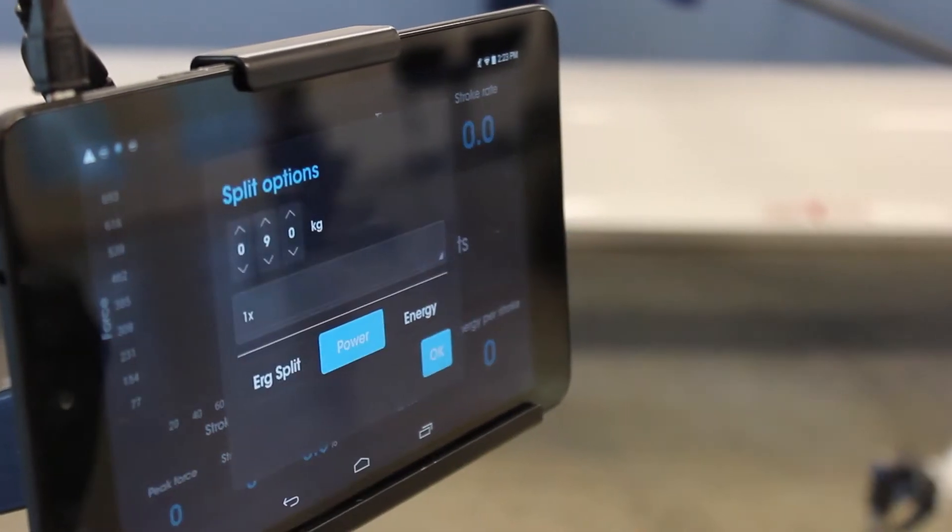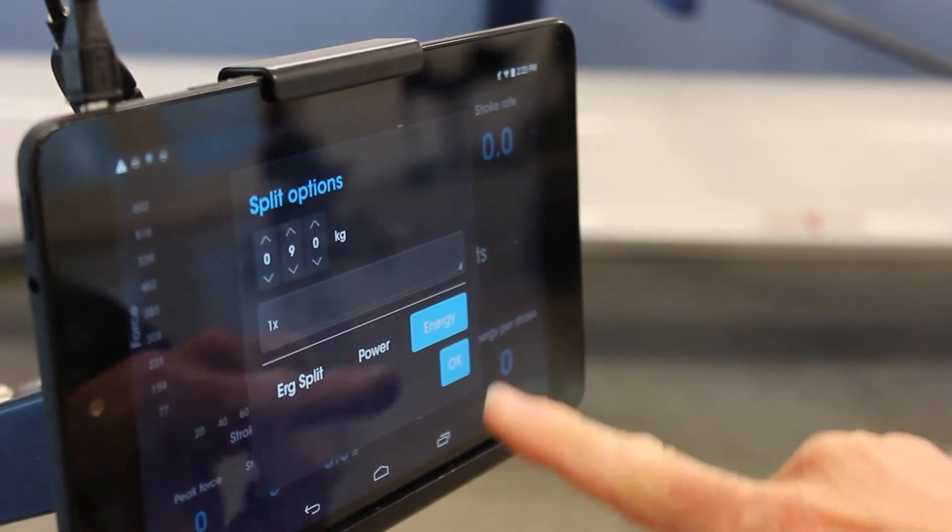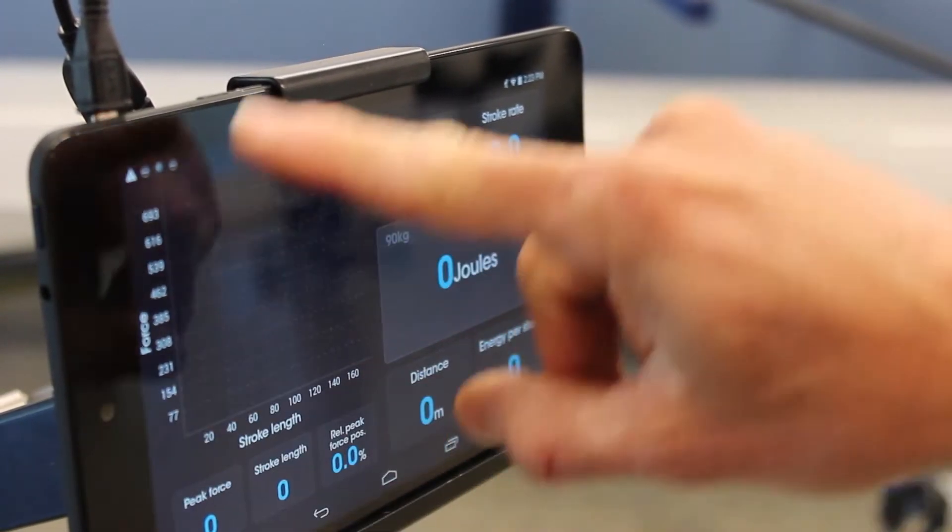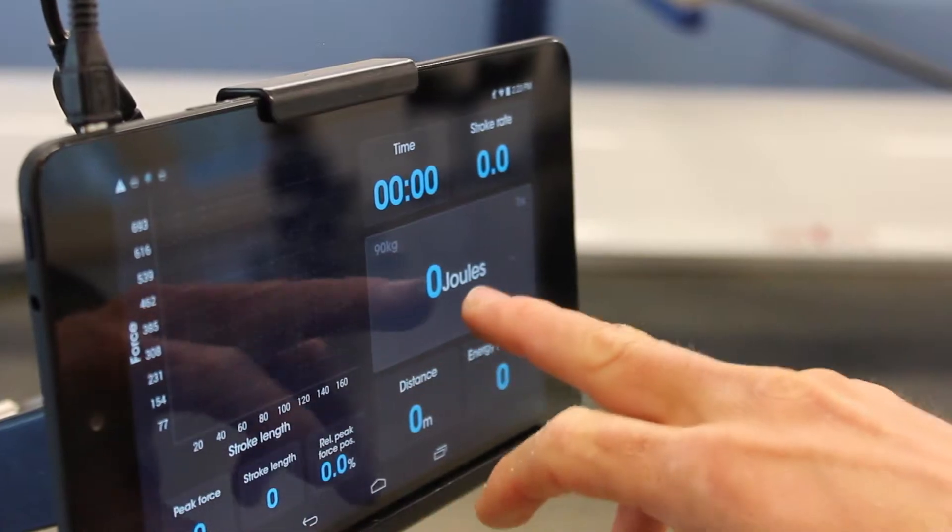And the third thing I can do is work on energy and it will give me joules, and that will be the area inside of the curve.